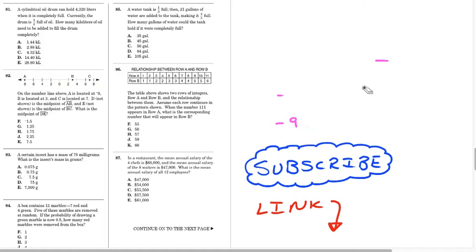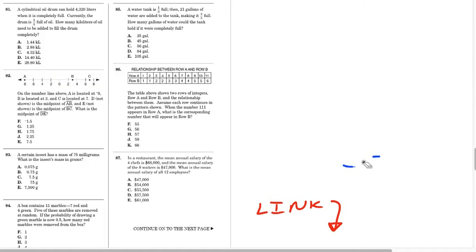We're talking about an oil drum. It is 4,320 liters when it's full. Currently, it's one-third of the way full. How many kiloliters of oil need to be added to fill the drum completely? So we need to figure out what is two-thirds of 4320. 4320 times two-thirds is 2,880.